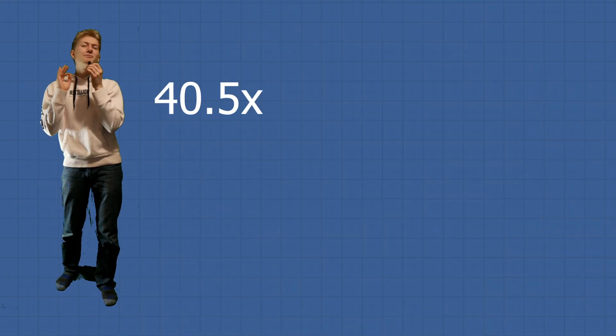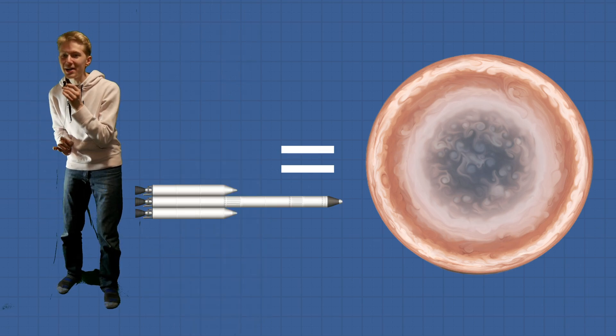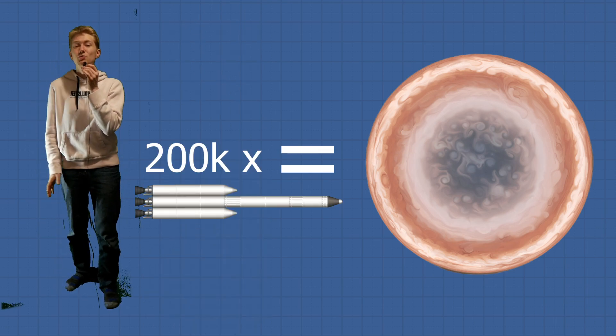But it doesn't stop there. If we compare the diameter of earth to the diameter of Jupiter, it would take 40.5 Earths to span across Jupiter. If you measured in three-stage rockets, it's going to take 200,000 three-stage rockets to get from one side to the other if they were stacked end to end.